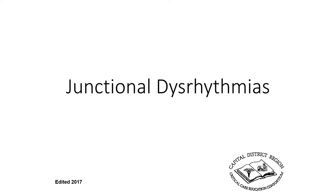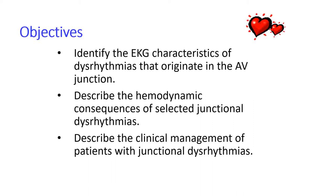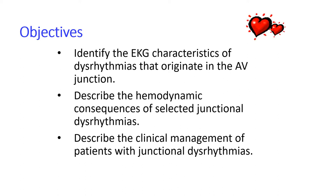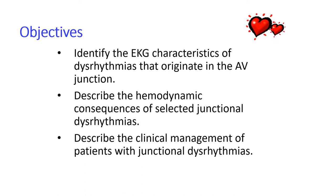In this lecture, we will be discussing junctional dysrhythmias, and this is Ginger Keen. Our objectives are to identify EKG characteristics of dysrhythmias that originate in the AV junction, describe the hemodynamic consequences of selected junctional dysrhythmias, and describe the clinical management of patients with junctional dysrhythmias.